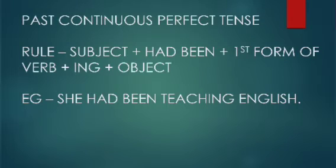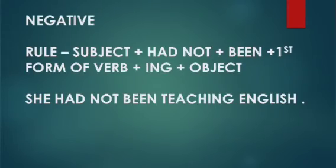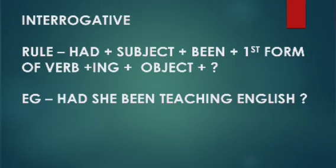Past Perfect Continuous Tense: Subject plus had been plus first form of verb plus ing plus object. Example: She had been teaching English. Negative: Subject plus had not plus been plus first form of verb plus ing plus object. Example: She had not been teaching English.